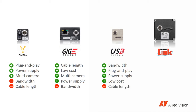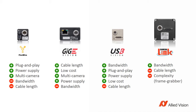CameraLink is a high-speed interface — up to 680 megabytes per second in its fastest version. However, the cable length is limited to less than 10 meters. Another drawback is that you need a frame grabber to connect your camera to the host PC, which makes the system more complex and more expensive to set up.